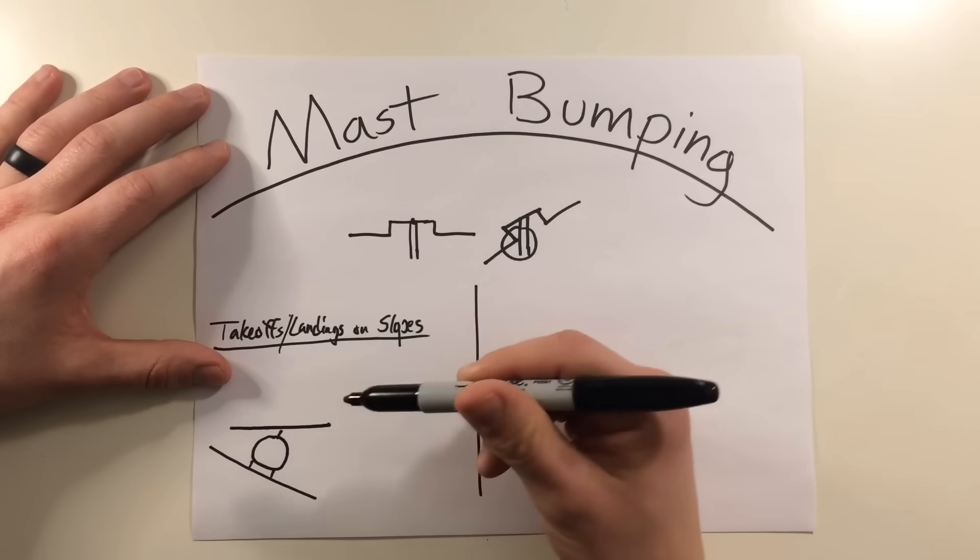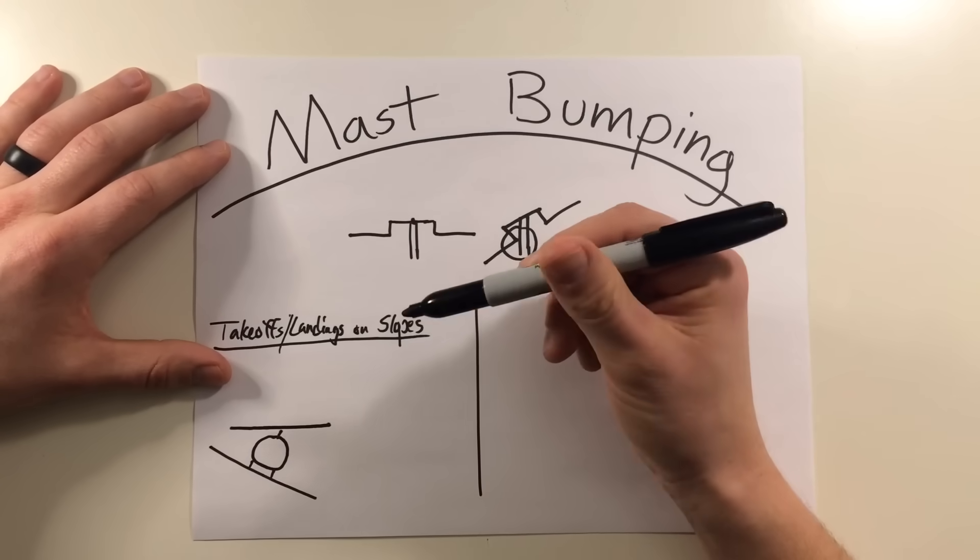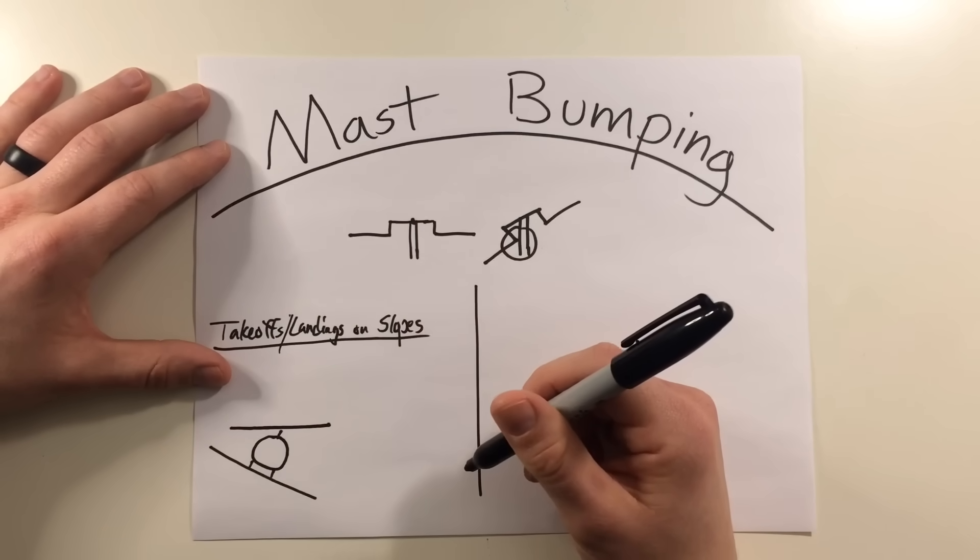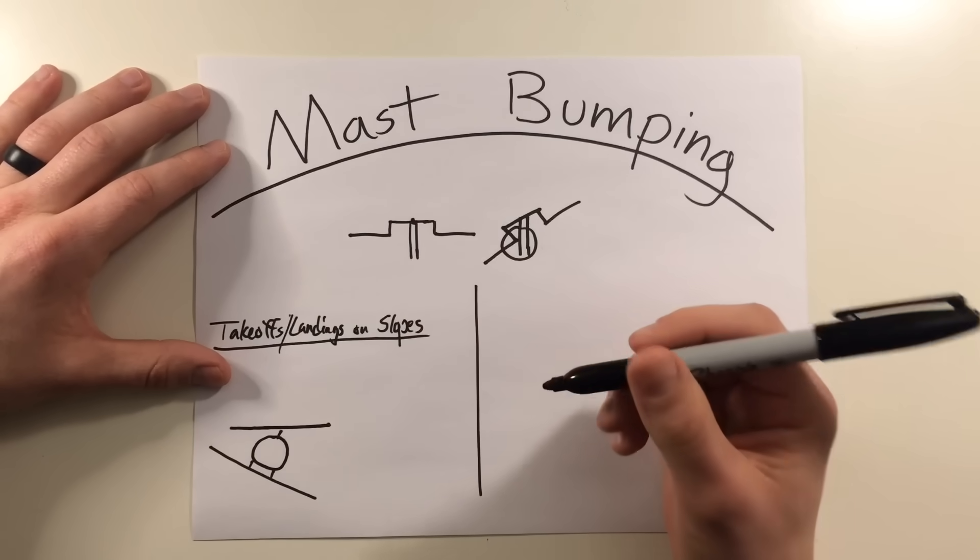Now to help prevent this, be sure to have some kind of collective applied prior to displacing the cyclic for a slope takeoff and try to avoid landings in which you have the maximum cyclic displacement in any direction.